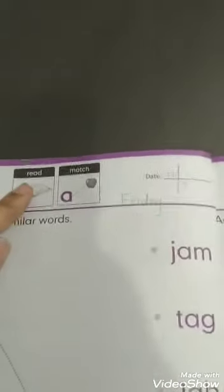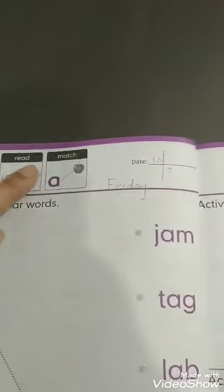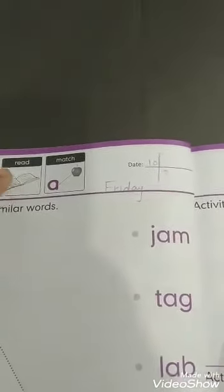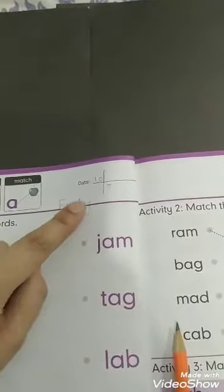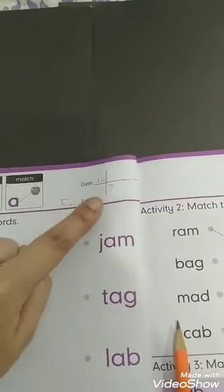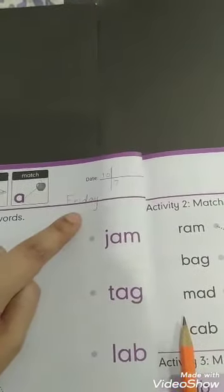Here are two icons - Read and match. Aaj hum log reading kareenge and matching kareenge. Then we will mention date and day here. Today is 10 slash 7 and today is Friday.